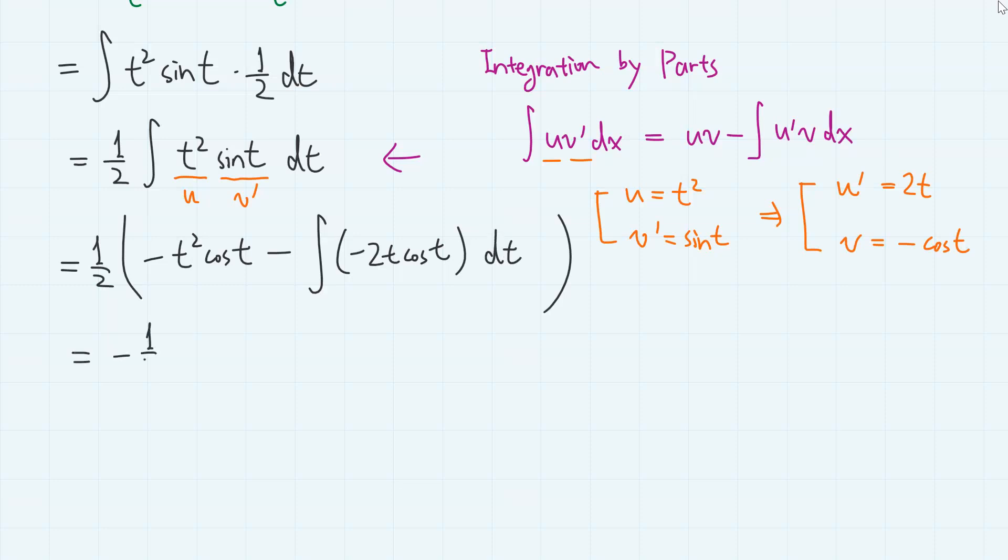So we have minus 1 half t squared cosine t, then plus integral t cosine t dt.